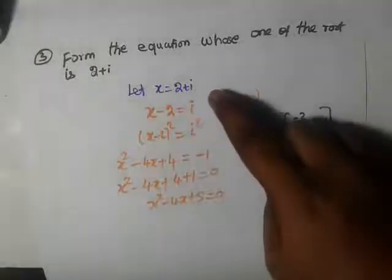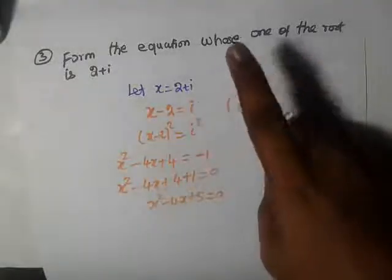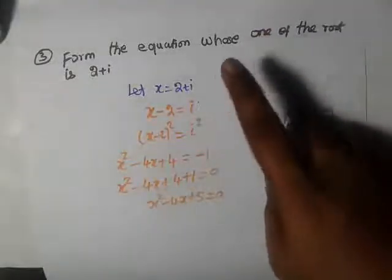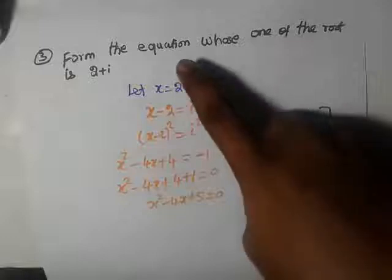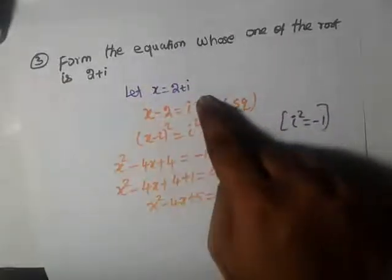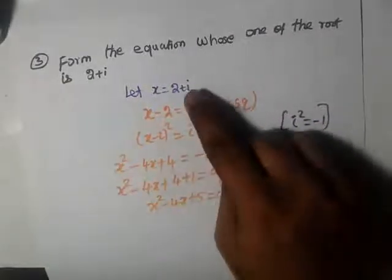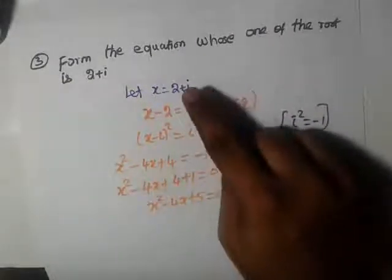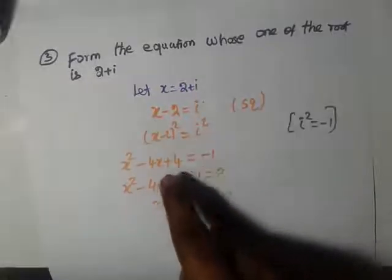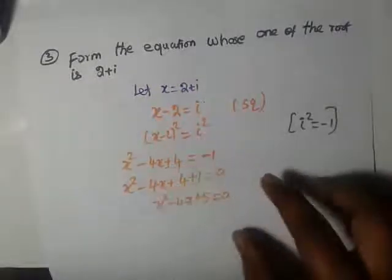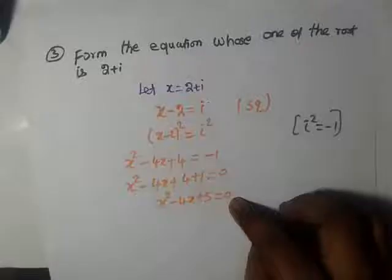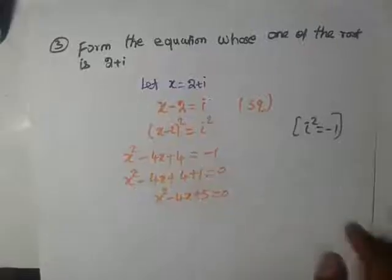So looking at this problem — it is imaginary, that is why i is used. x equals the imaginary number 2 plus i. i² value is minus 1. This is the required equation: x² minus 4x plus 5 equals 0.